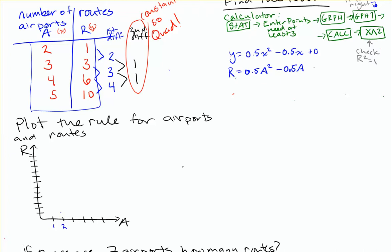Two airports have one path between them. Three airports have three paths between them. Four airports will have six. And five airports will have seven, eight, nine, ten. So five airports will have ten. And you can see I'm getting a nice curve here.